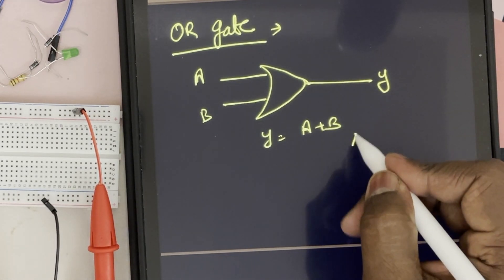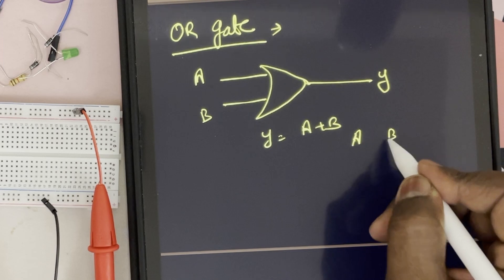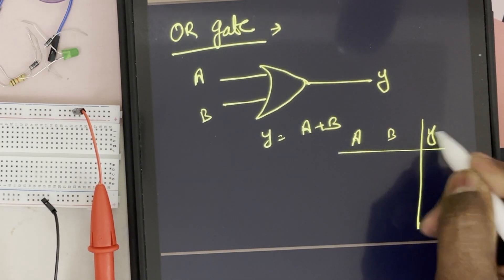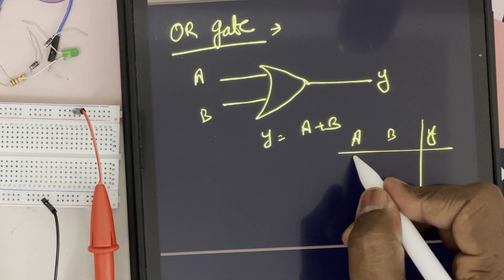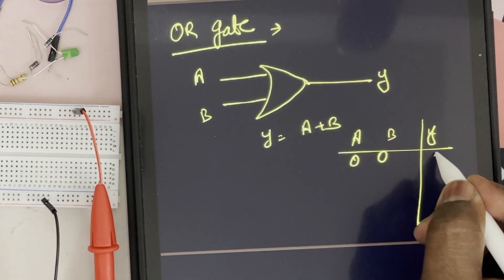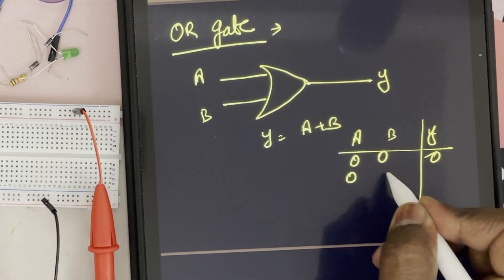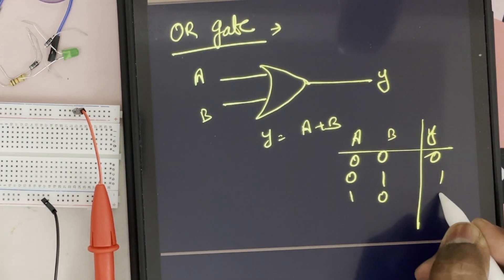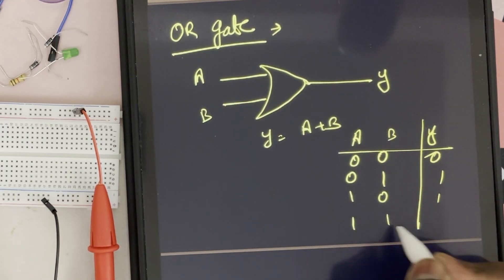The truth table is: A, B, Y — 0, 0, 0; 0, 1, 1; 1, 0, 1; 1, 1, 1.